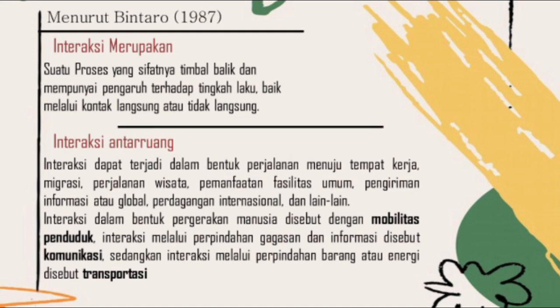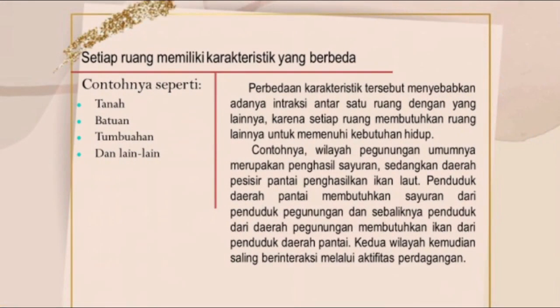Apa penyebab terjadinya interaksi antar ruang? Mengapa interaksi antar ruang bisa terjadi? Karena setiap ruang memiliki karakteristik yang berbeda, contohnya seperti tanah, batuan, tumbuhan, dan lain-lain. Setiap ruang di permukaan bumi memiliki ciri khas tertentu yang berbeda antara suatu wilayah dan wilayah yang lainnya. Tidak ada satu lokasi pun yang karakteristiknya sama persis antara satu dan lainnya. Karakteristik inilah yang kemudian menciptakan keterkaitan antar ruang di permukaan bumi.